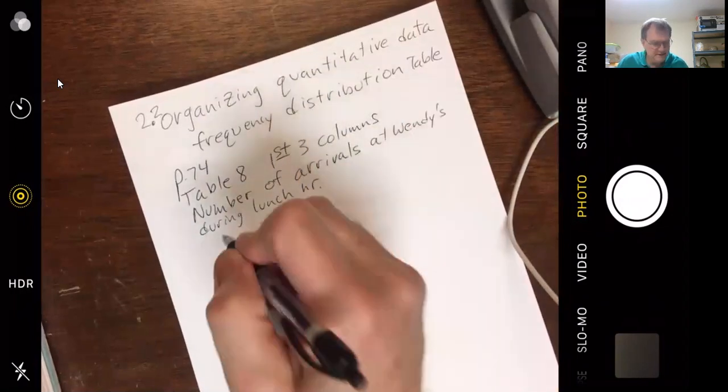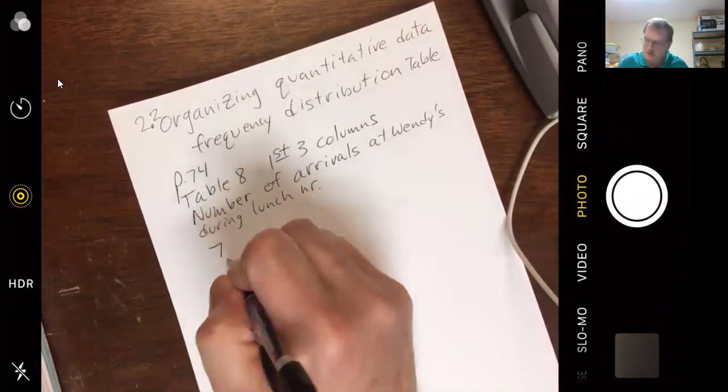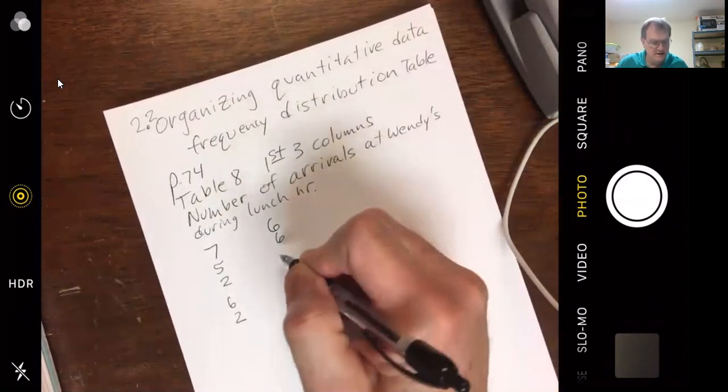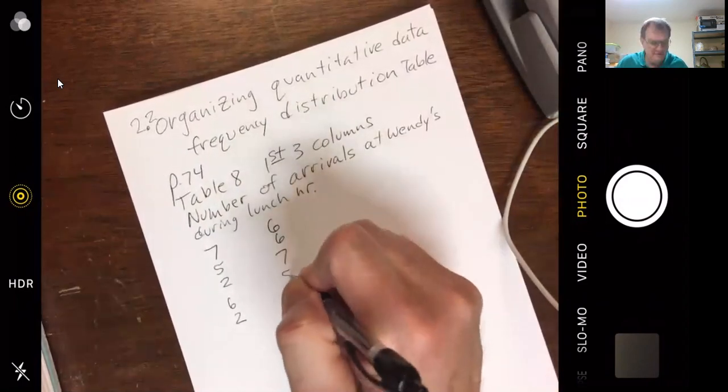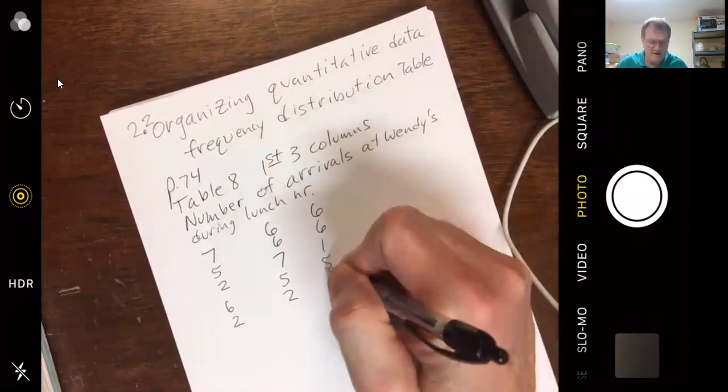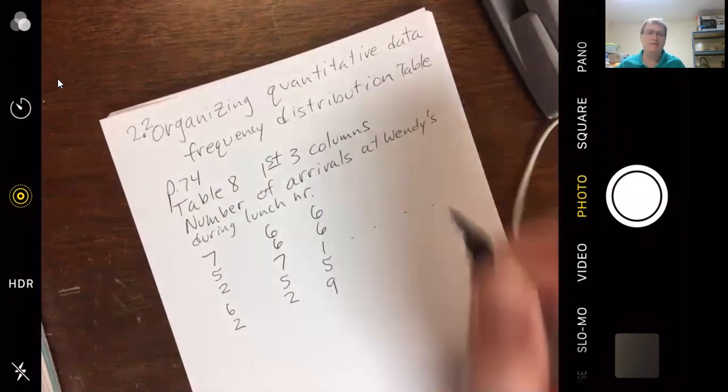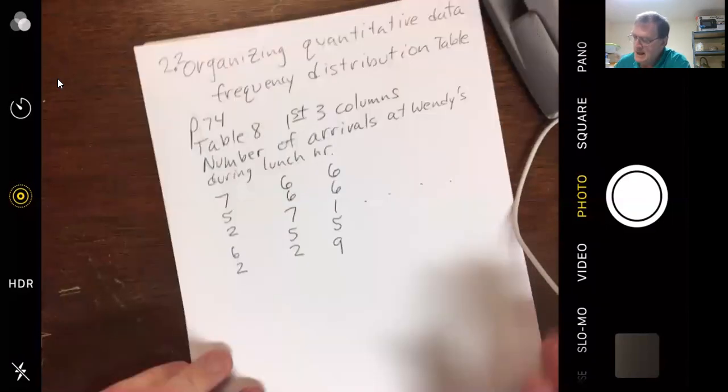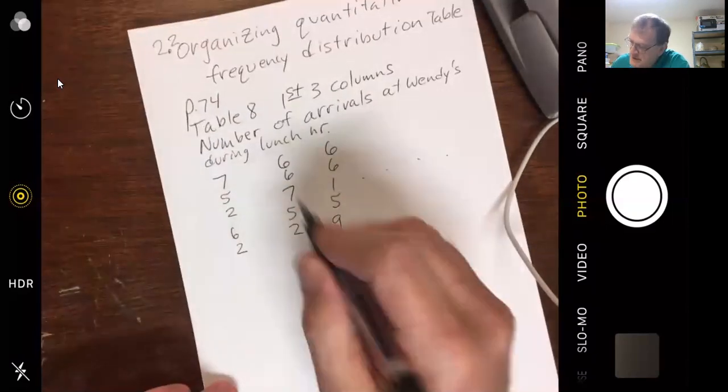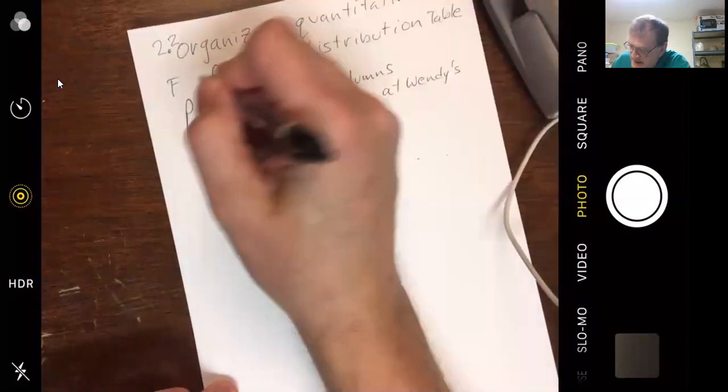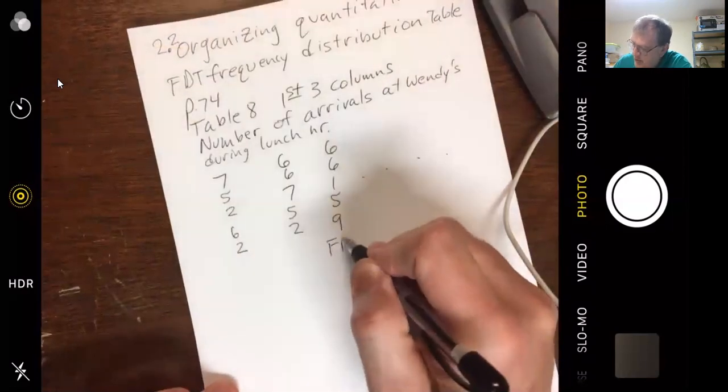First three columns. Number of arrivals at Wendy's. Or customers. During their lunch hour. I've got 7, 5, 2, 6, 2, 6, 6, 7, 5, 2, and 6, 6, 1, 5, and 9. And it goes on. All right. So, what we would do as a general rule. You're in a frequency distribution table. We'll call that F, D, T. Frequency distribution table.